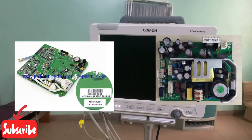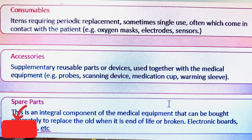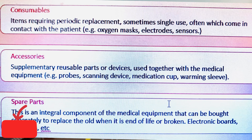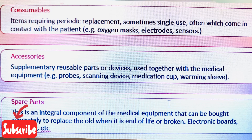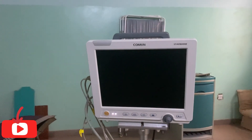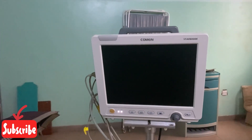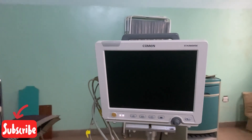To recap: accessories are items used frequently on different patients; consumables are discarded after every use; and spare parts are part of the machine which carry out a function or aid the functionality of the machine. That's all about the difference between consumables, spare parts, and accessories for a multi-parameter patient monitor. Thank you for watching — don't forget to like, share, and subscribe if this is your first time on this YouTube channel.